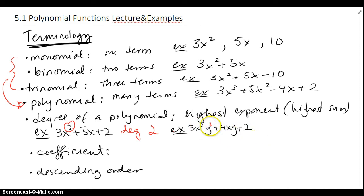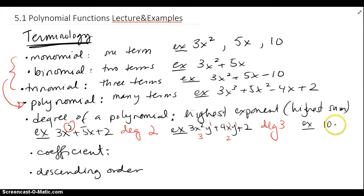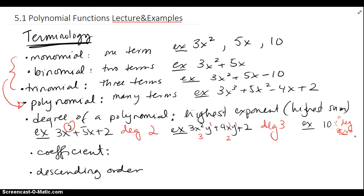For a term like x squared times y, the exponents are 2 and 1, so the sum is 3. For another term with x and y, the sum is 1 plus 1 which is 2, and a constant term has no variables so we don't worry about it. So we pick the biggest sum, meaning this polynomial would have degree 3. Also note that a monomial with no variables has degree 0 — it's as if there's an invisible x to the 0.